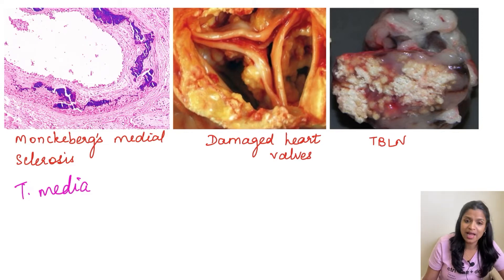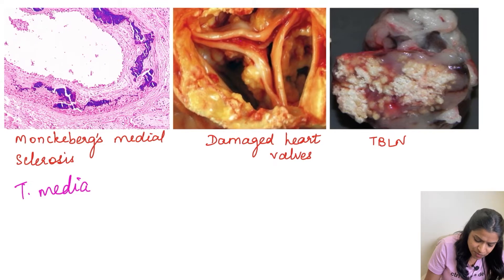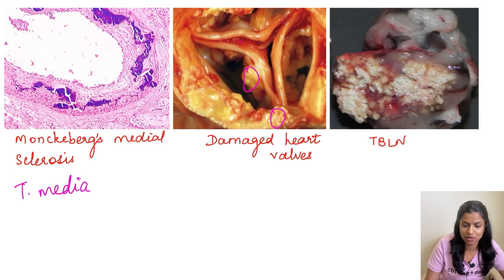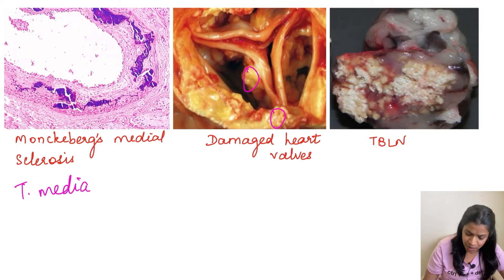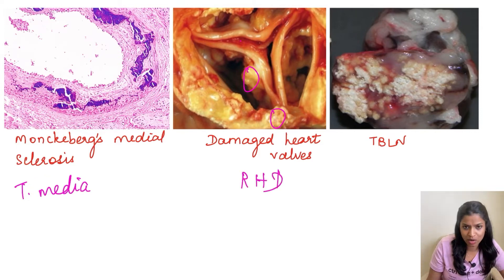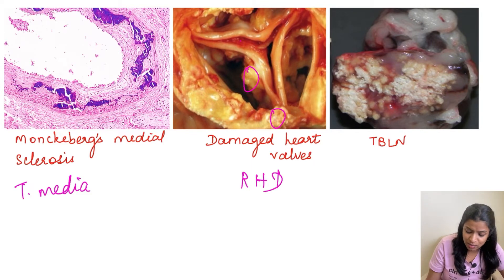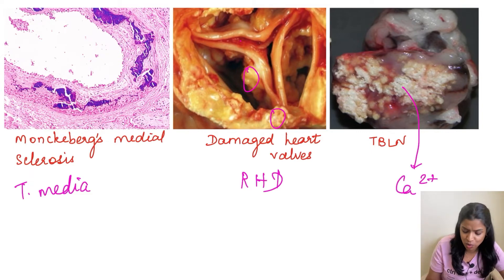The second image is that of a damaged heart valve which is entirely stenosed — all the deposits are calcium. These are gritty deposits damaging the heart valve, seen in rheumatic heart disease. The third image is of a tuberculous lymph node which has entirely become calcium — this whitish area is entirely calcium, quite hard like a stone, and is an example of dystrophic calcification.